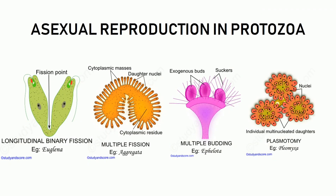Here are a few ways protozoans reproduce asexually. Protozoans are unicellular animals — they are primitive animals. There are various methods by which they reproduce asexually, but our major focus in this video is going to be on binary fission, because this is the way by which paramecium reproduces asexually. We also have multiple fission, seen in Aggregata; budding or multiple budding, seen in Ephelota; and plasmotomy, seen in Pelomyxa.